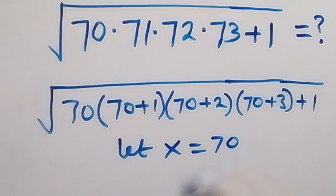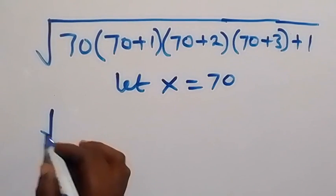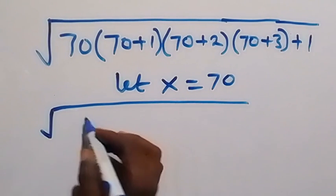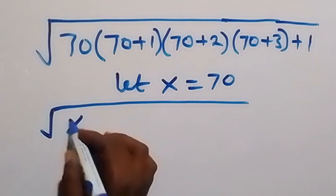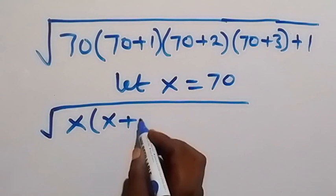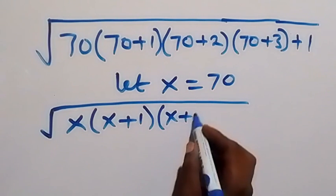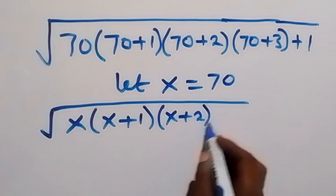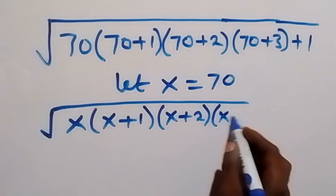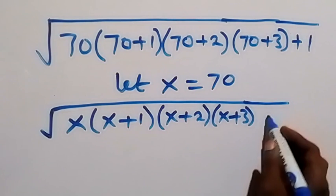We can write this in terms of x as the square root of x multiplied by (x plus 1), then multiplied by (x plus 2), multiplied by (x plus 3), then plus 1.